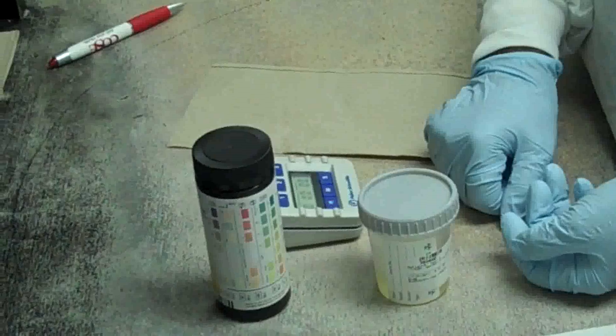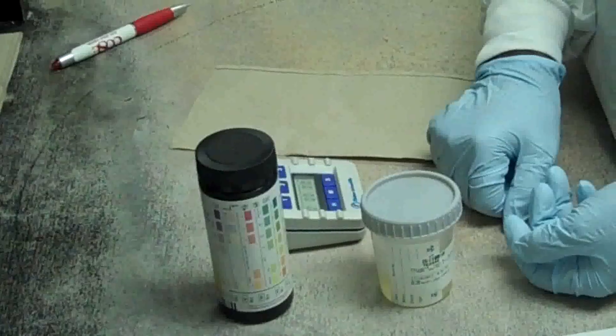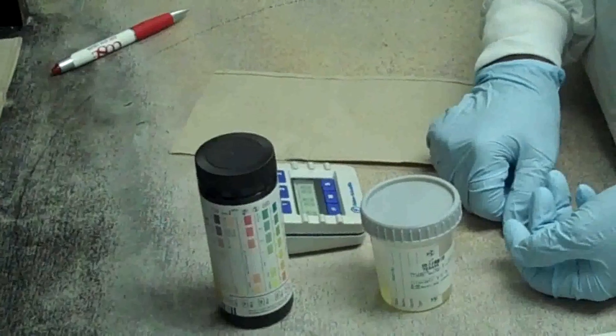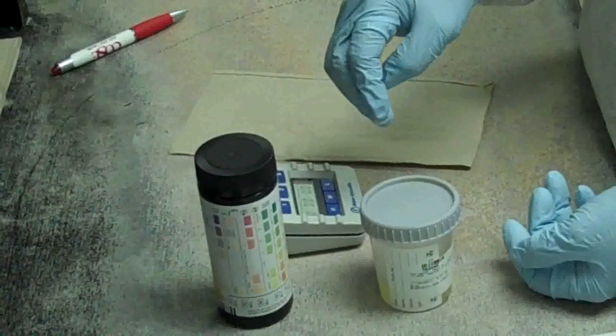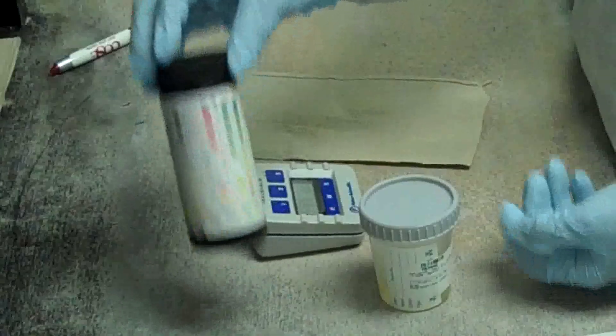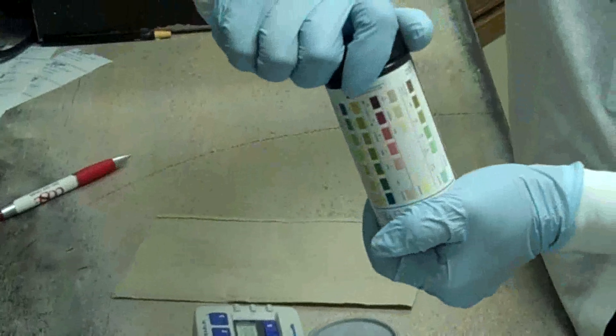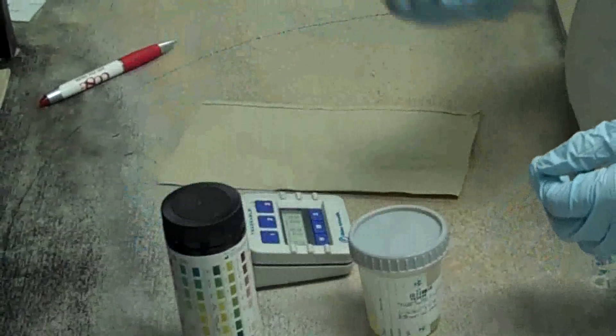Assure the open date, receive date and QC date are indicated on the reagent bottle when first opened. Do not remove the strip from the bottle until immediately before use. Replace cap immediately and tightly after removing the strip. Avoid touching the test areas of the reagent strip.